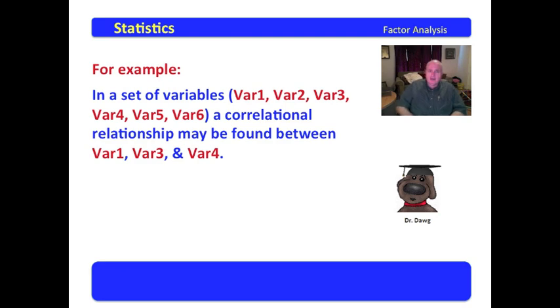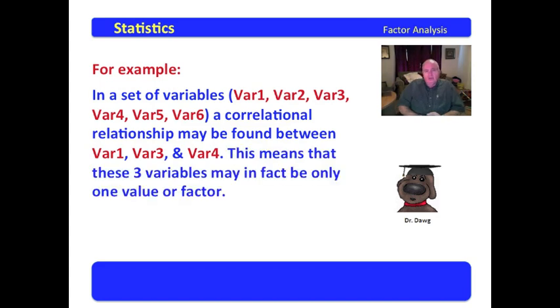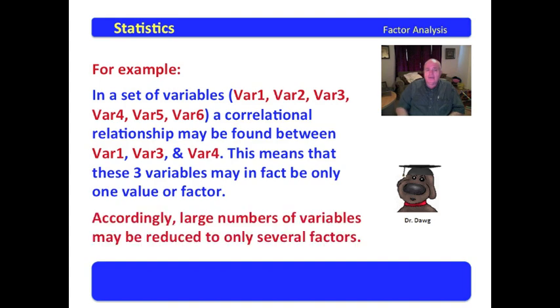Here's an example of factor analysis. We'll take a set of variables: variables 1, 2, 3, 4, 5, and 6. We do an analysis and find a correlational relationship between variables 1, 3, and 4. In other words, 1, 3, and 4 patterned together. Therefore, this might mean that variables 1, 3, and 4 may, in fact, be only one value or factor. Accordingly, large numbers of variables can be reduced to only several factors.